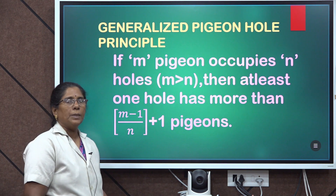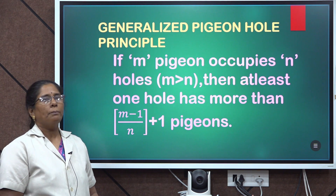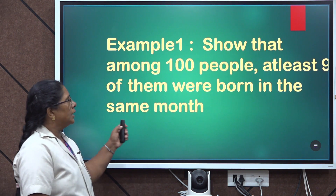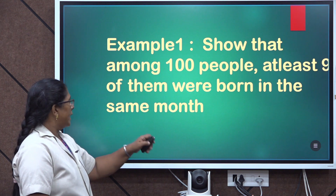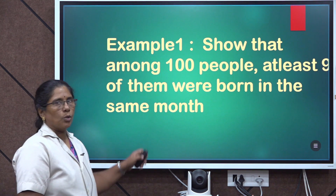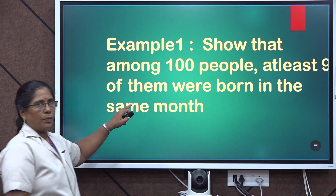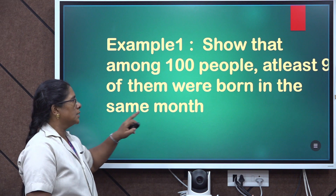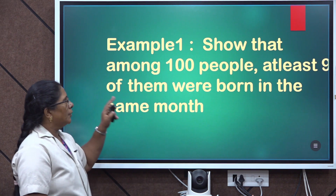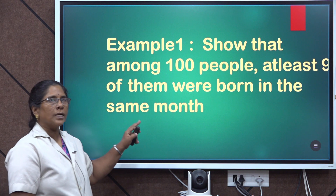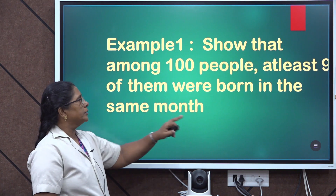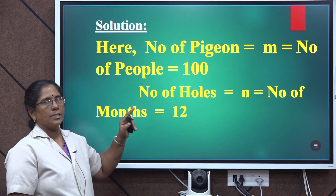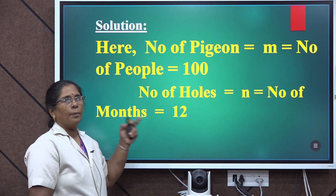Now let us see some problems based on real life applications of the Pigeonhole Principle. The first problem is to show that among 100 people, at least 9 of them were born in the same month. Here we are given 100 people and asked to prove that 9 of them were born in the same month, using the generalized Pigeonhole Principle.